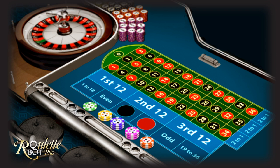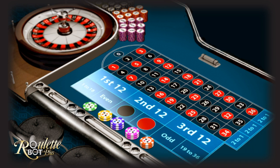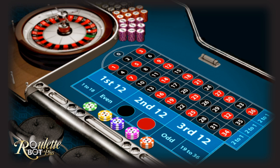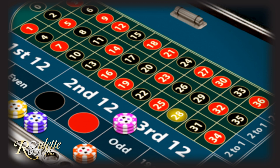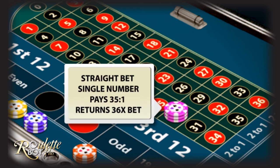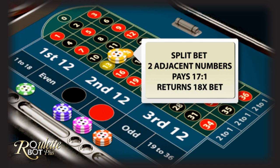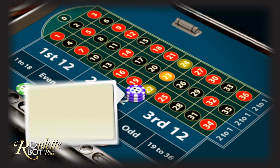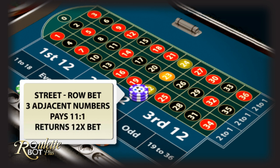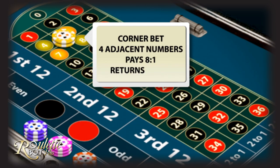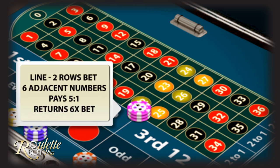Bets on the roulette table are divided between inside and outside bets. The most common bets are inside bets, but there is a lower chance of winning them. The outside bets are more moderately played yet the chances of winning them are higher. Betting options on the inside are: straight bet — a bet on a single number, chances of winning are 1 in 35, profit is 1 to 35. Split bet — on two adjacent numbers, chances of winning are 1 in 17. Street bet — on three numbers in a row, chances of winning are 1 in 11. Corner bet — on four adjacent numbers, chances of winning are 1 in 8. Line bet — on six numbers over two rows, chances of winning are 1 in 5.